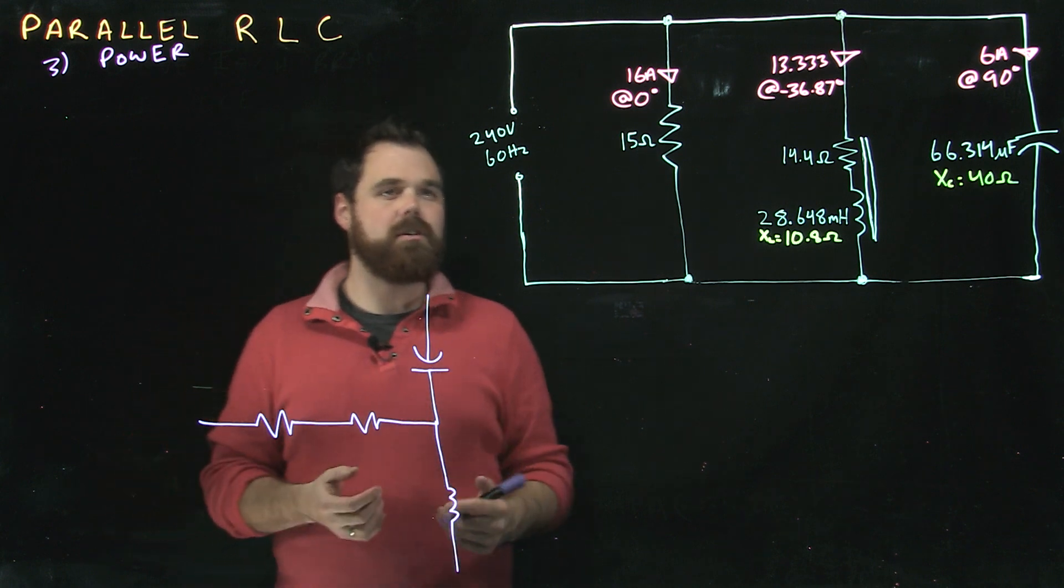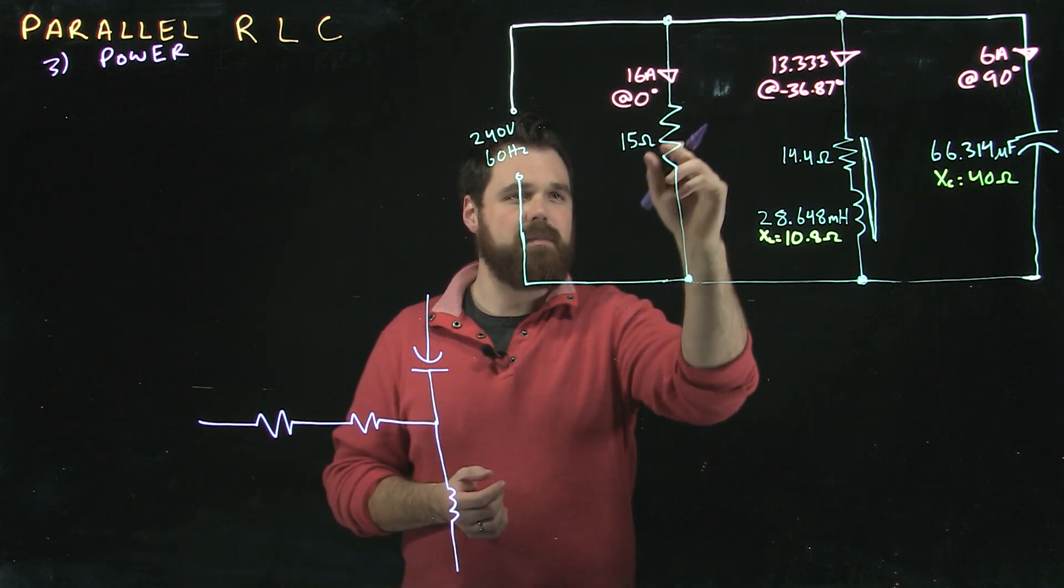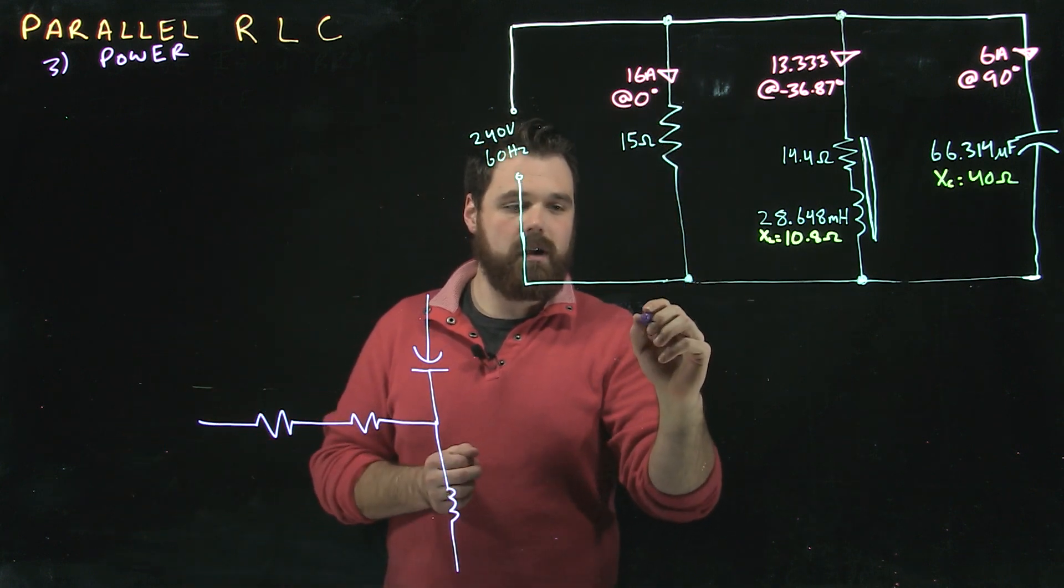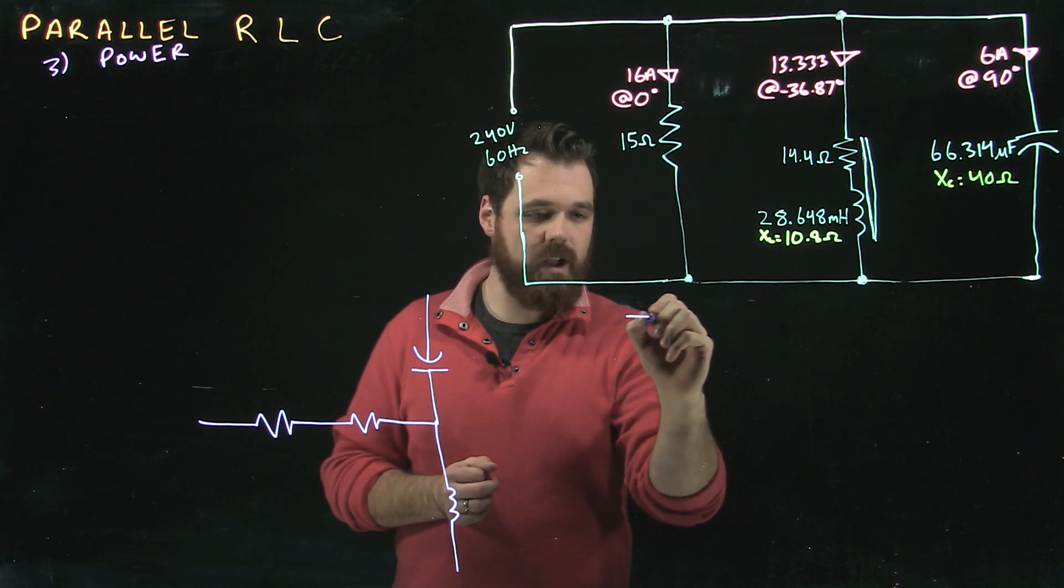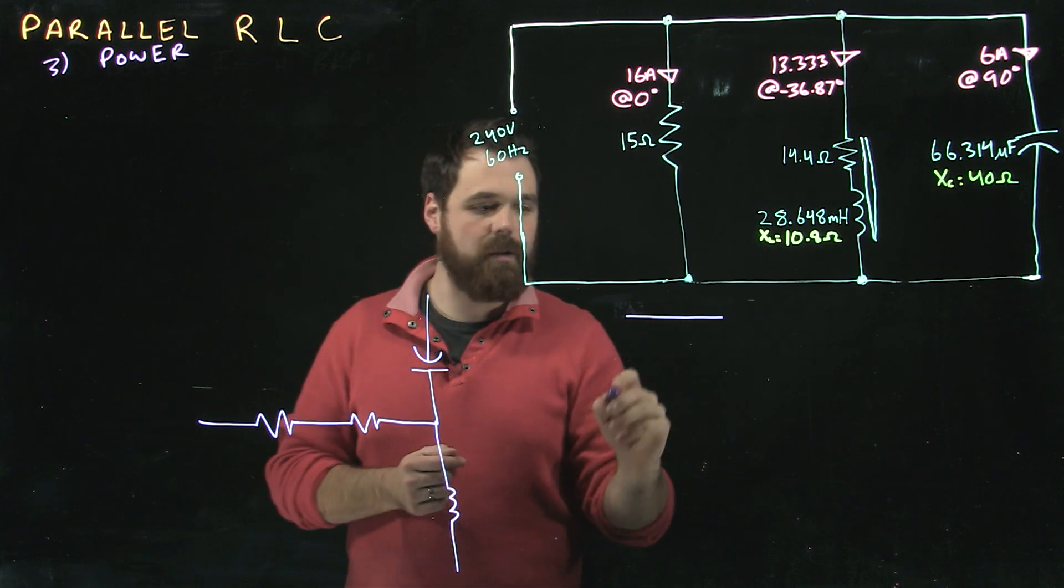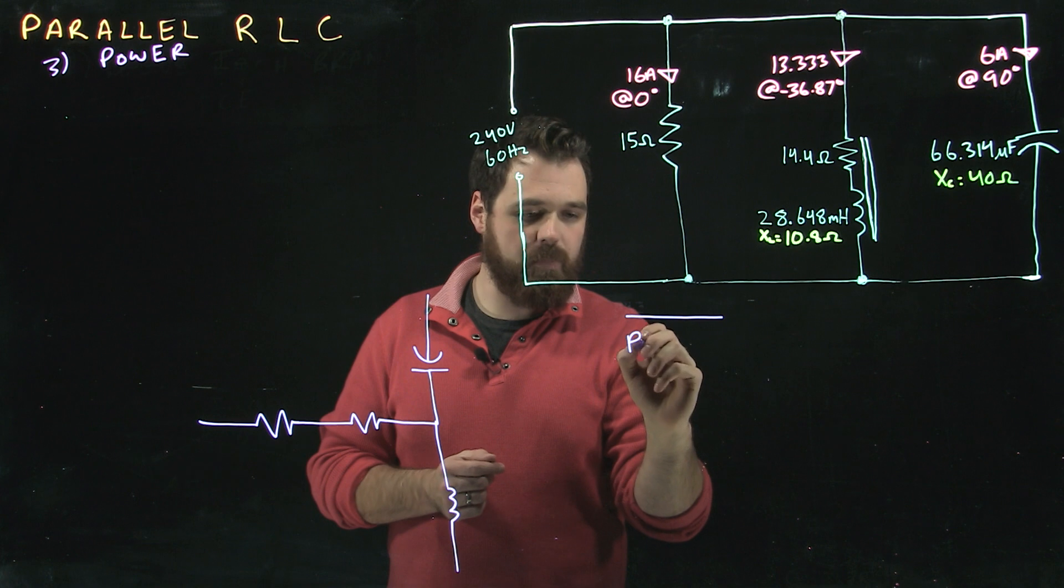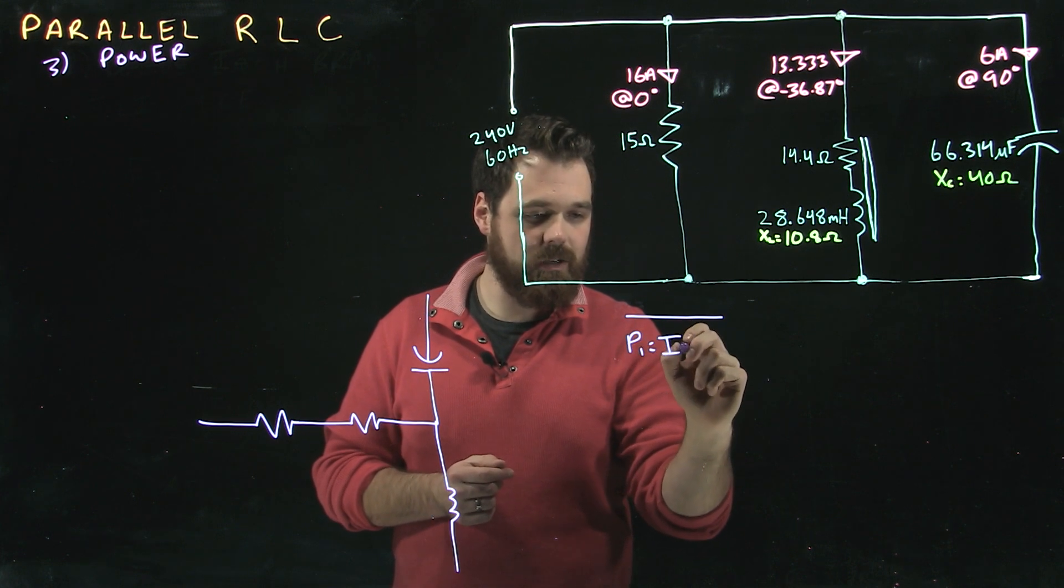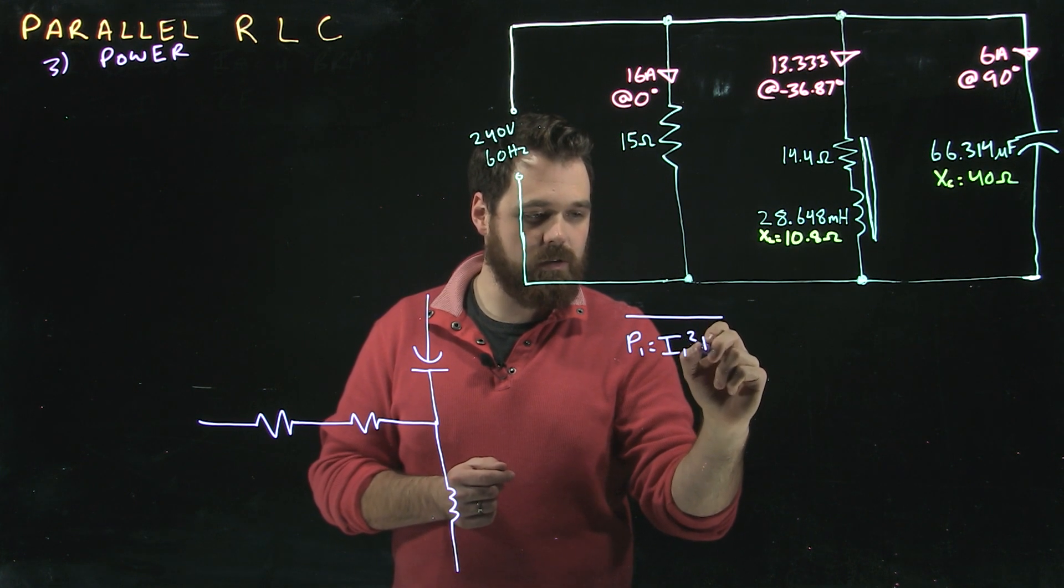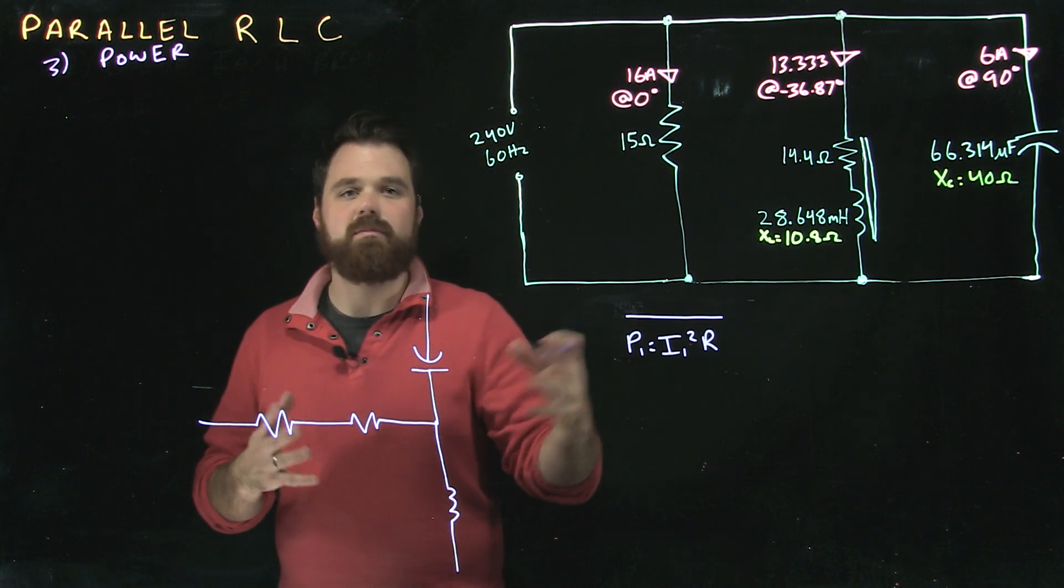So here what I would do is I would look at the circuit, and say okay, 16 amps, only a resistor. I'm going to use my power triangle for that branch would look like this, and I'm going to say P1 is going to equal I1 squared times the resistance in branch 1.